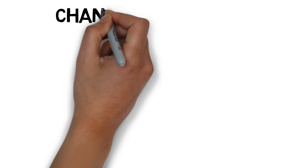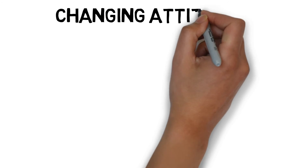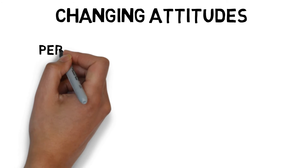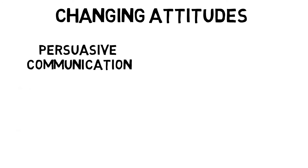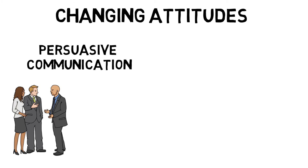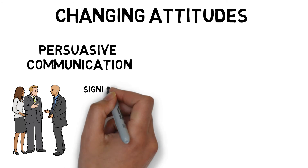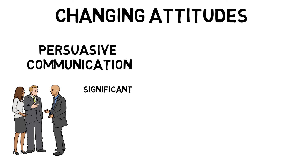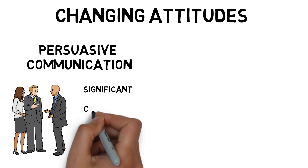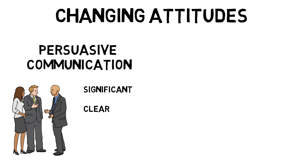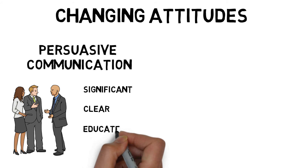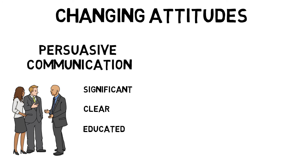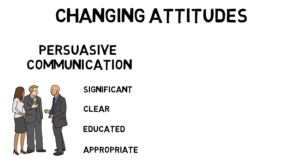It is of course possible to change attitudes. There are commonly two accepted ways in which to do this. Persuasive communication is most effective if the persuader is considered significant or has a high status. The message needs to be clear, unambiguous, confident, logical and appeal to the recipient's sense of fear or failure. The recipient must be educated enough to understand the message, and the message should be given at an appropriate time and within the correct context.